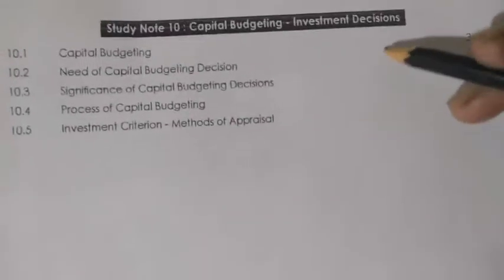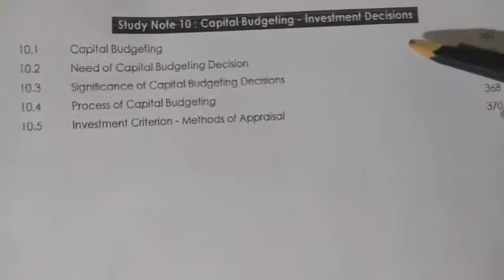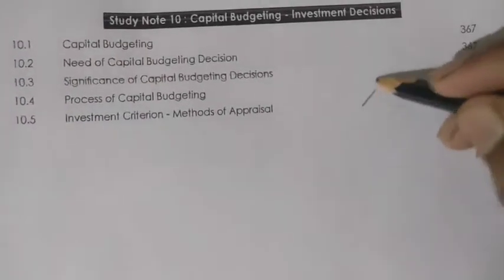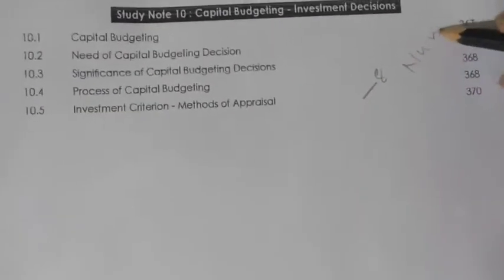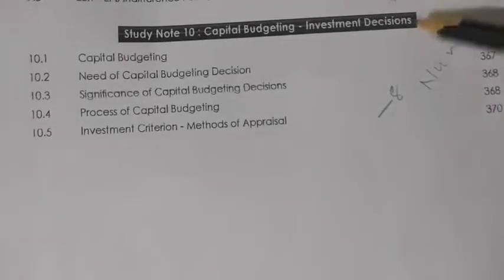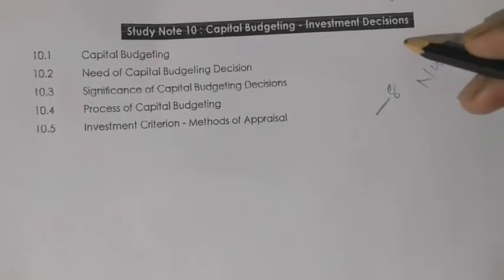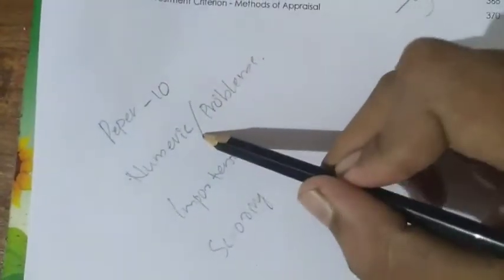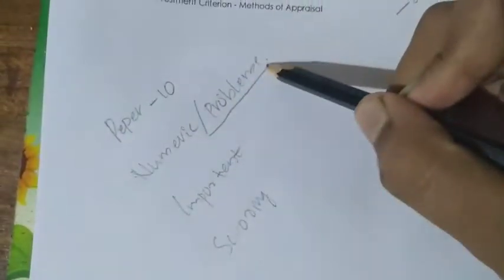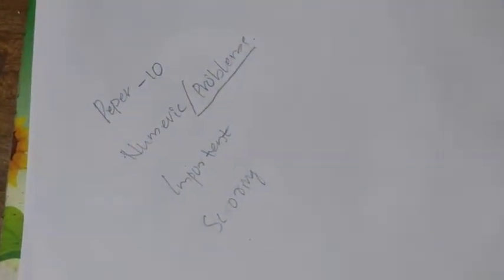The last chapter is Capital Budgeting. Capital Budgeting contains a number of numerical questions. This is a 3-mark chapter in terms of numerical questions. Overall, Paper 10 is a paper with a large number of numerical questions.